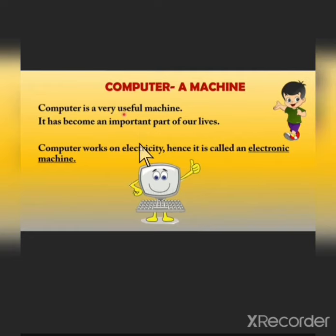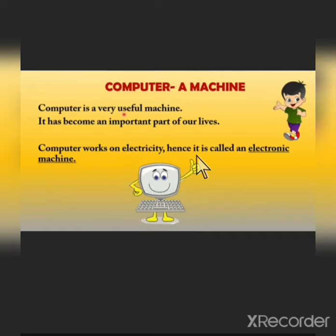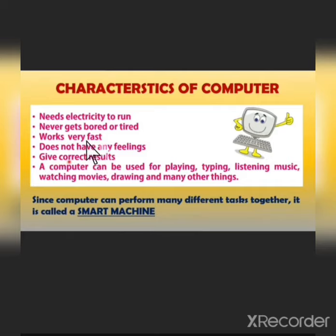We use computers in almost every field of life nowadays — at railway stations, at hospitals, even at restaurants and malls. So basically computers are used almost everywhere. Computer works on electricity, hence it is called an electronic machine. The reason is very simple: because computer works on electricity.